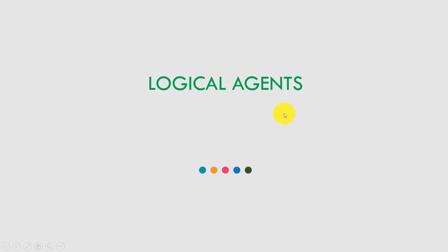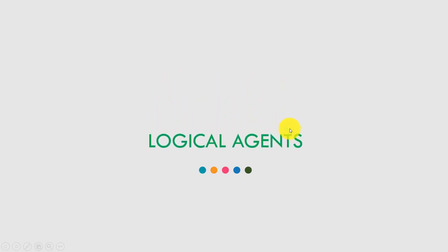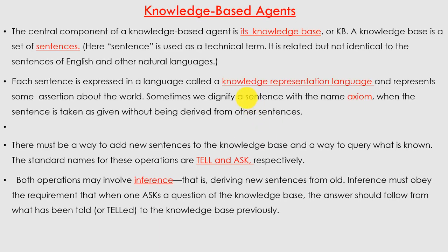Good morning. We are going to start a chapter on logical agents, specifically knowledge-based agents and how they apply in artificial intelligence. The central component of a knowledge-based agent is its knowledge base. In gaming, for example, some knowledge is given to the machine and it represents based on that. A knowledge base is a set of sentences, each expressed in a knowledge representation language, representing some assertion about the world.